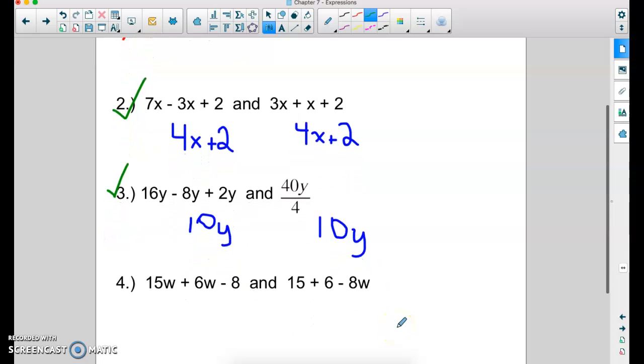And then for number four, I have 15w plus 6w minus 8. Well, the 15w plus 6w would be 21w minus 8. Then for my second one, if I combine like terms, 15 plus 6 minus 8w. This is the only w, but I can combine 15 plus 6, which would be 21, 21 minus 8w. So are these two expressions equivalent? Is 21w minus 8, the same thing as 21 minus 8w? The answer is no, they are not equivalent.